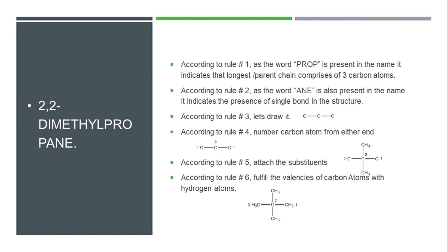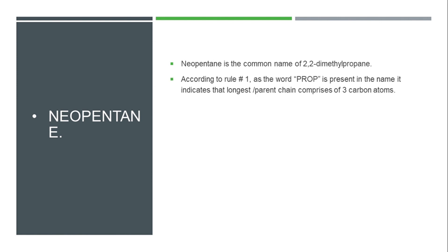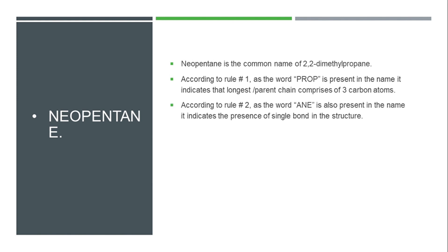The last part of the question is neopentane. Neopentane is the common name of 2,2-dimethylpropane. Since it is 2,2-dimethylpropane, 'prop' means a 3-carbon chain with single bonds present. When we draw the skeleton and number it, we attach the methyl groups accordingly.